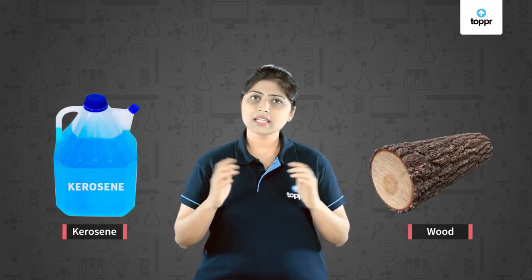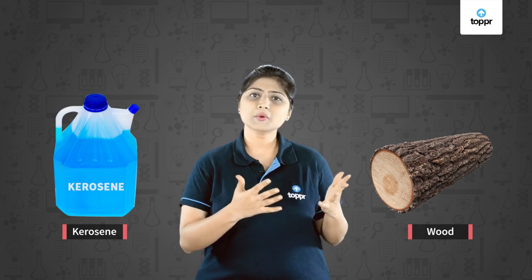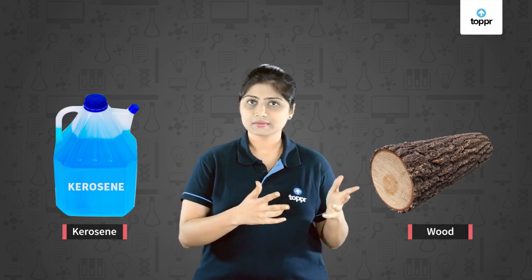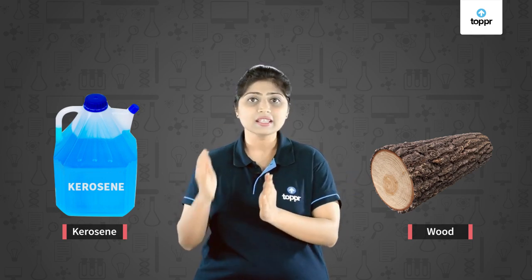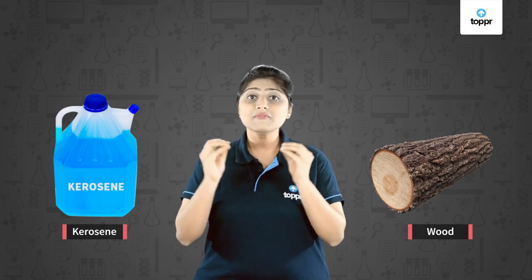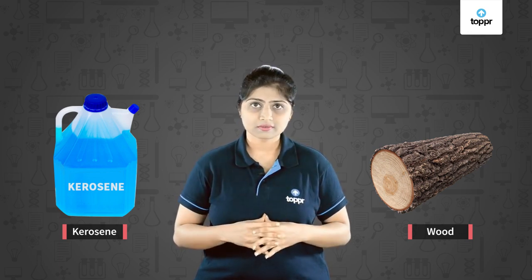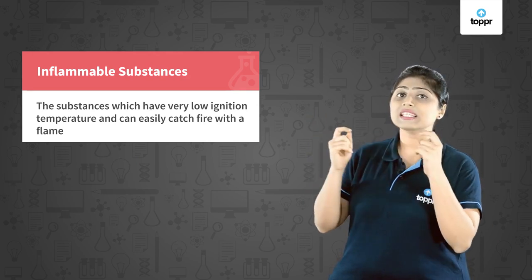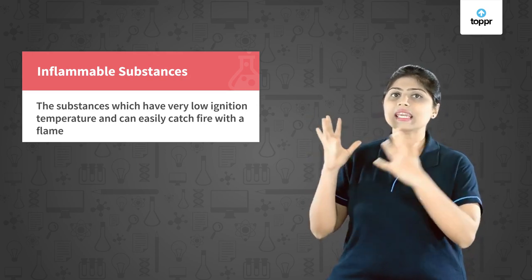We have two substances: kerosene and wood. We try burning both of them — which substance will burn more quickly? Kerosene, right? Wood will take a little more time to burn. That means the heat required by kerosene to burn is less compared to wood, so the ignition temperature of kerosene is lower than that of wood. Substances which catch fire very soon are called inflammable substances — their ignition temperatures are much lower. Substances whose ignition temperature is very low are called inflammable substances.